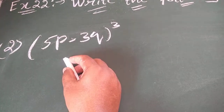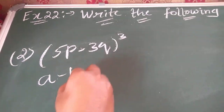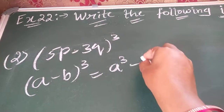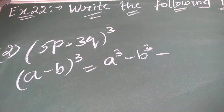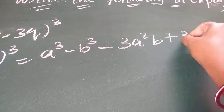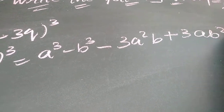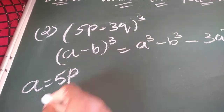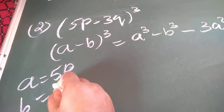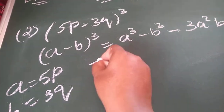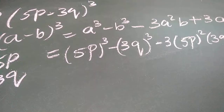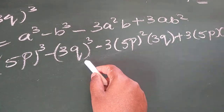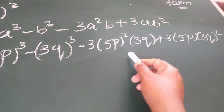The next question matches the identity a minus b whole cube. a minus b whole cube equals a cube minus b cube minus 3a square b plus 3ab square. Here a equals 5p and b equals 3q. I have substituted: wherever there is a I have written 5p, and wherever there is b I have written 3q.